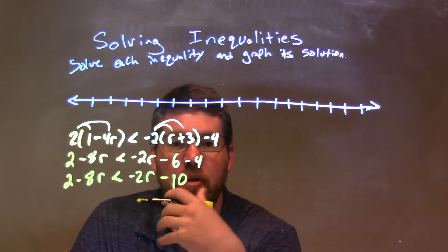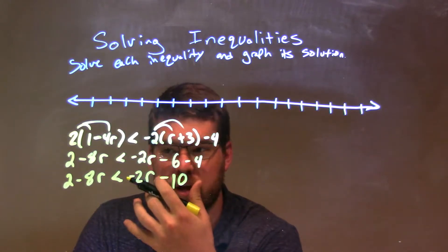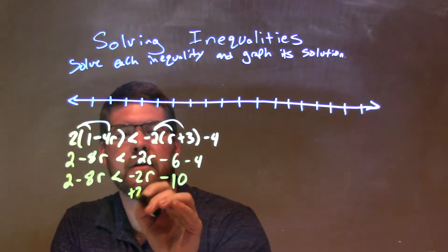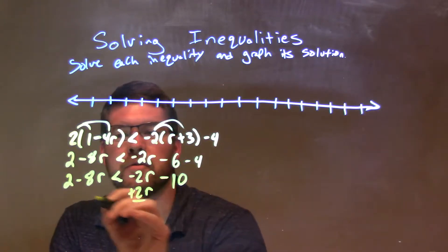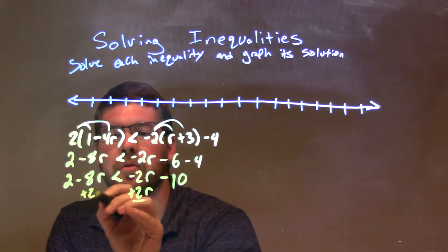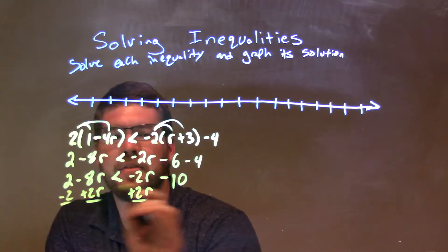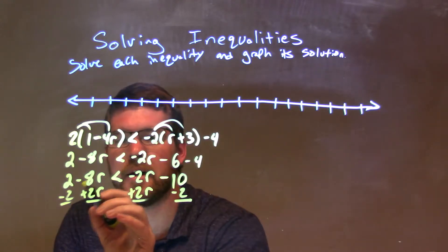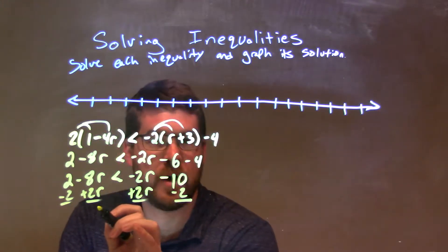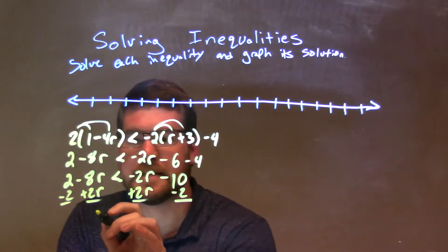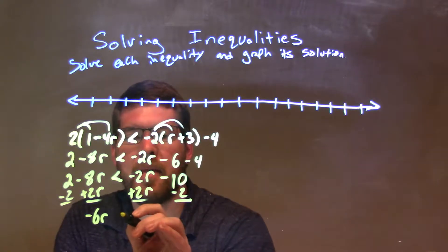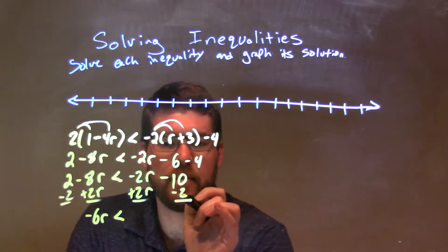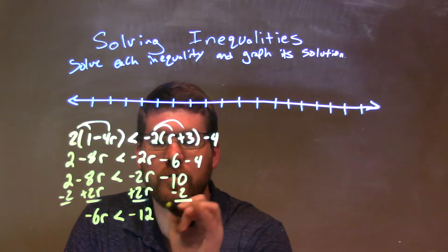Let's bring our numbers together and our letters together. We add 2r to both sides, and subtract 2 from both sides as well. That gives me negative 8r plus positive 2r, which is negative 6r, and that is less than negative 10 minus 2, which is negative 12.